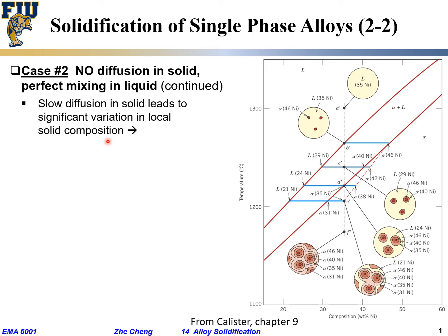Now let's look at another phase diagram — it's not eutectic, but it's okay. We are looking at a phase diagram where the vertical axis is temperature, it's still binary, and the horizontal axis is composition. We are doing solidification for a system of this composition. Up top is single-phase liquid; bottom is single-phase alpha; in between is alpha plus liquid.